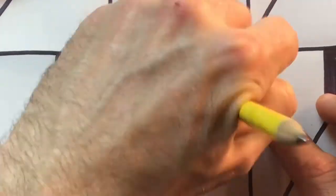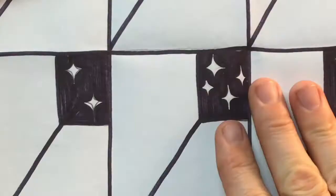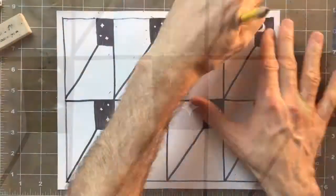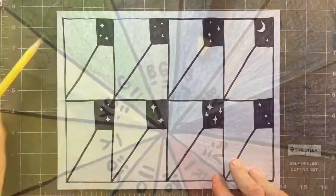When you're done tracing your lines and filling in, you can come back with your eraser and erase your pencil lines to clean up your edges and make everything look nice and pristine.